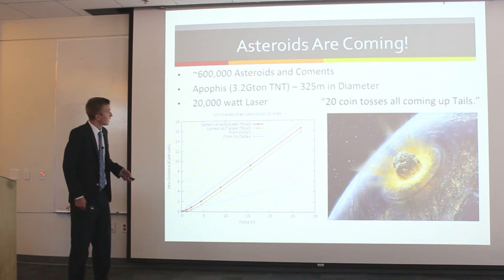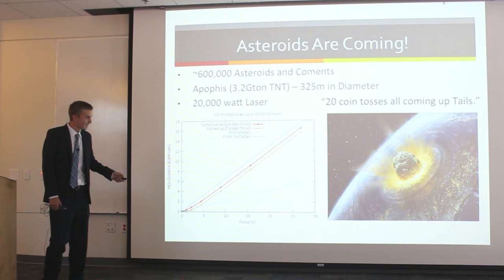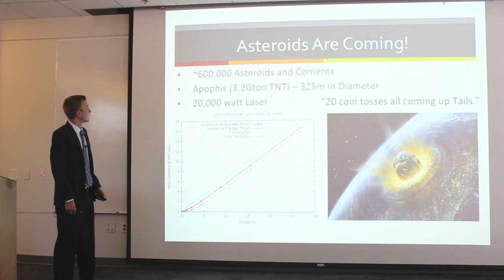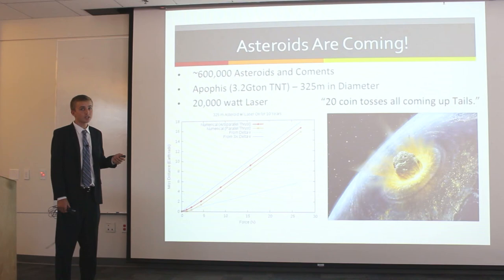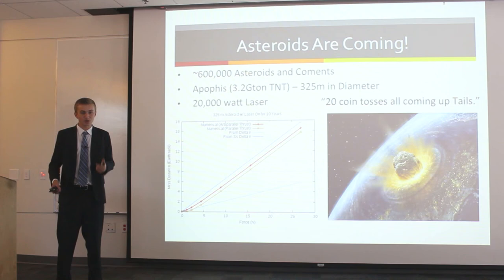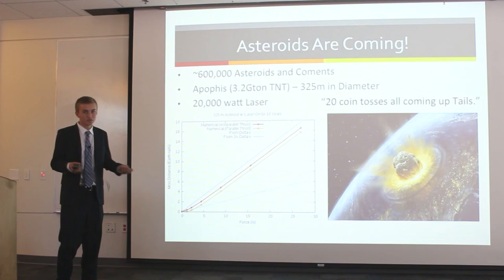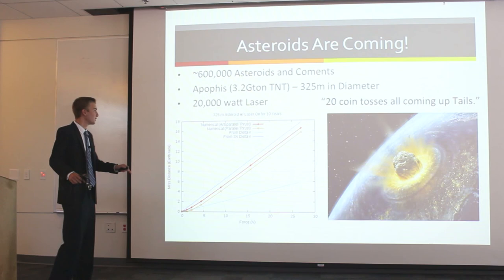To go back a bit — asteroids are coming and they can cause huge problems for us on Earth. Apophis is a 325-meter diameter asteroid that will be passing in 2036, with a one-in-a-million chance of hitting Earth. That's like flipping a coin and getting tails 20 times in a row. So be aware.